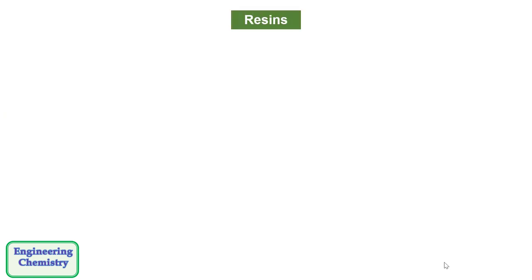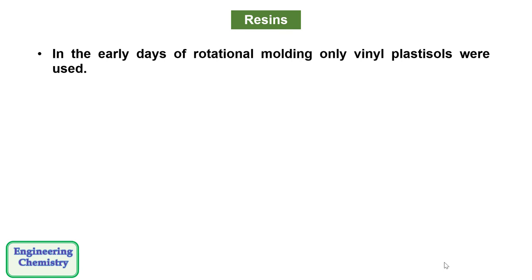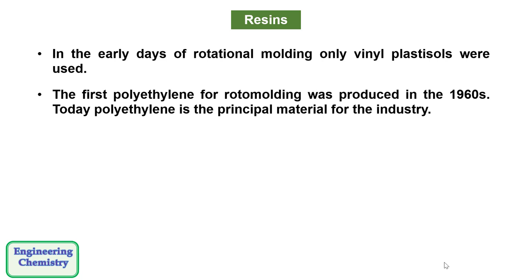Let's move to the resins. In the early days of rotational molding, only vinyl plastisols were used. The first polyethylene for rotomolding was produced in the 1960s. Today polyethylene is the principal material for the industry.